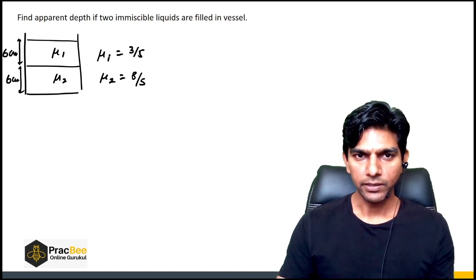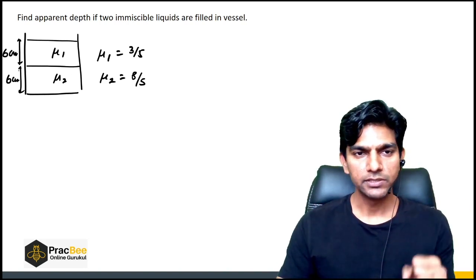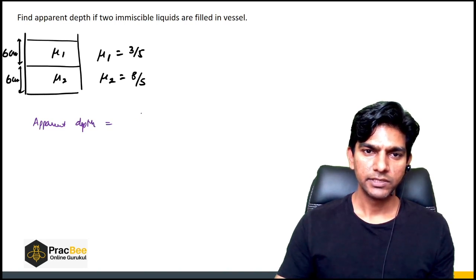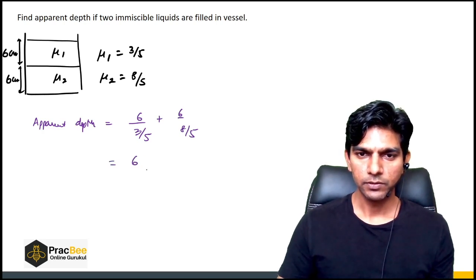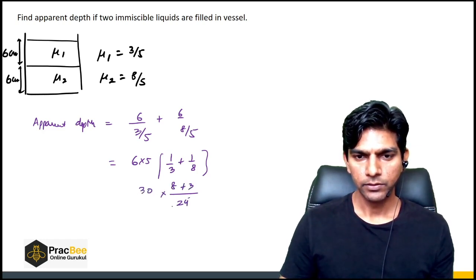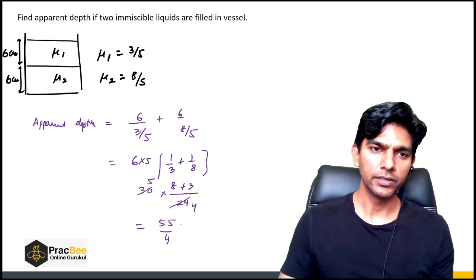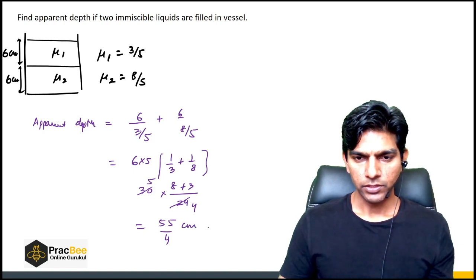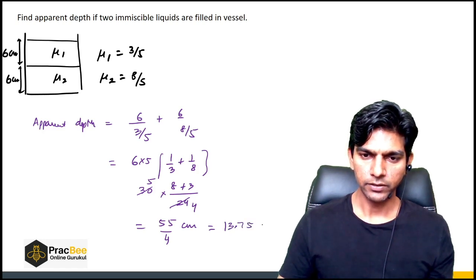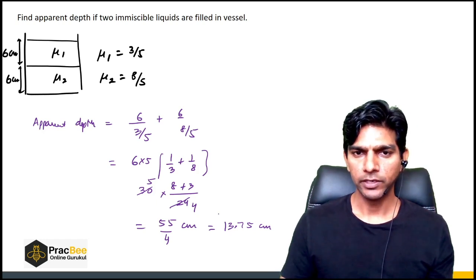Next: find the apparent depth when two immiscible liquids are filled in a vessel, with given refractive indices and heights. The apparent depth formula gives: apparent depth = (6/3)×(1/5) ... simplifying with the given values of heights and refractive indices: apparent depth = (6/5)(1/3 + 1/8) = (6/5)(11/24) = 66/120... the answer comes out to be 55/4 = 13.75 cm.